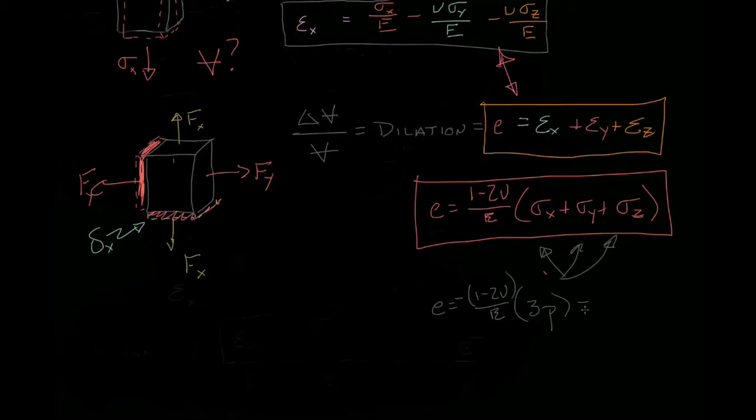A reminder that pressure is always positive, but it's compressive, so you're going to have a negative sign in here. Or if we wanted to rewrite that, we'd say it's negative 3, 1 minus 2 nu over e times p.